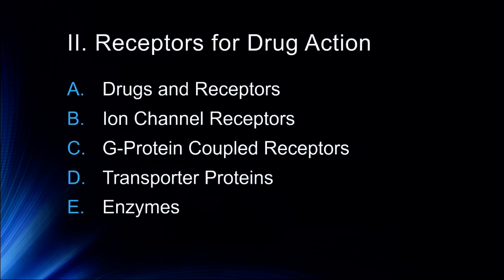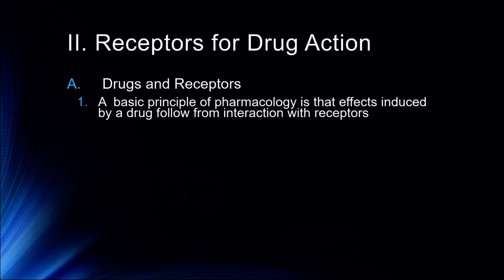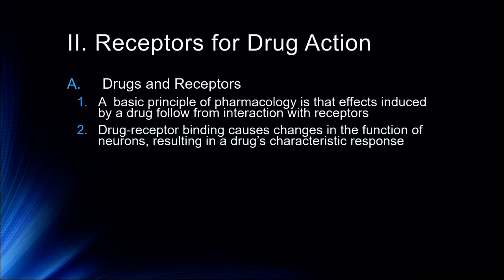Now we'll spend some time talking about receptors for drug action: ion channel receptors (ionotropic receptors), G-protein coupled receptors (metabotropic receptors), transporter proteins, and enzymes. The basic principle of pharmacology is that effects induced by a drug follow from interaction with those receptors — in psychopharmacology, primarily receptors in the brain. Drug-receptor binding causes changes in the function of neurons, resulting in that drug's characteristic response.